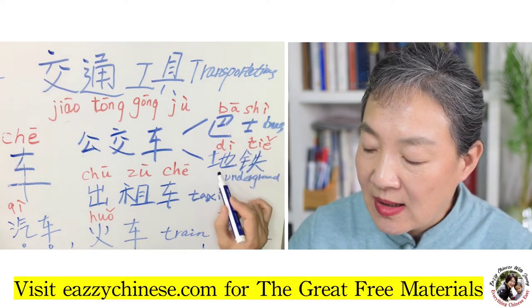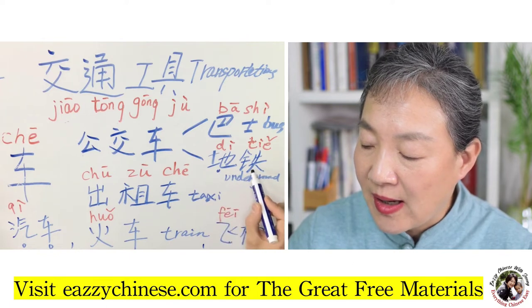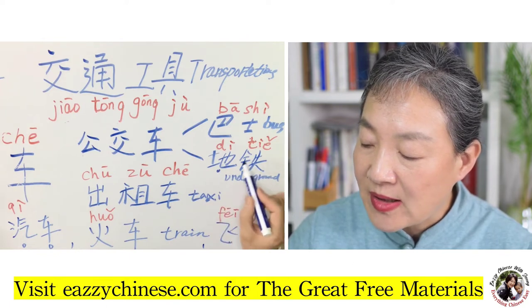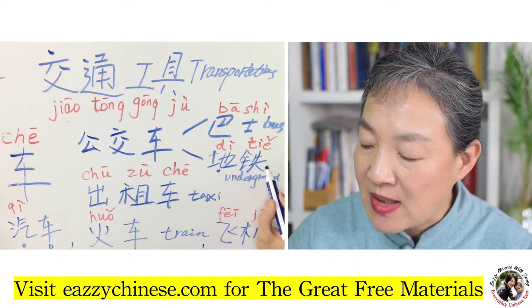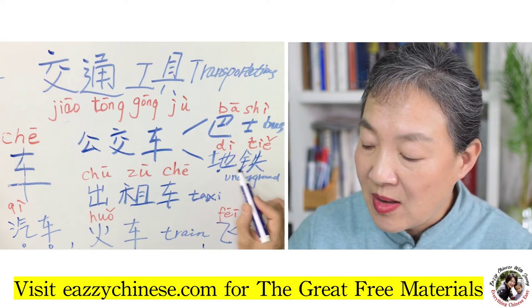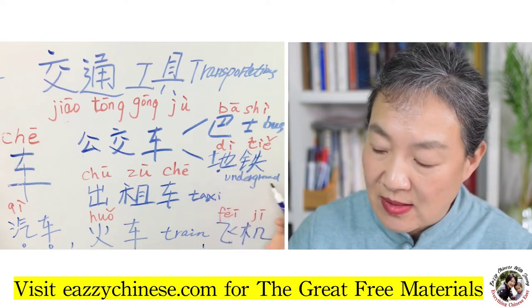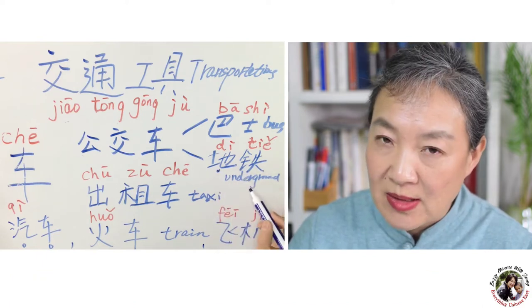地铁 — 地 means ground, 铁 originally means iron. 地铁 means underground, or subway.